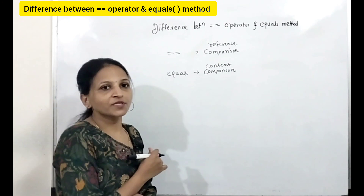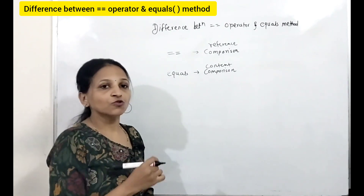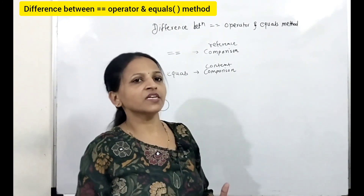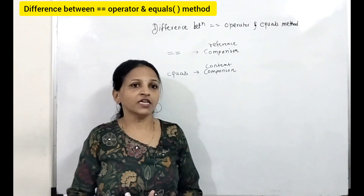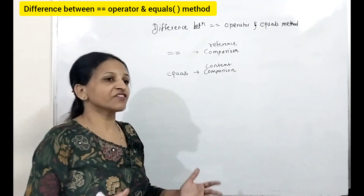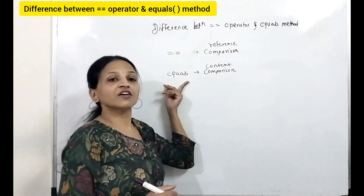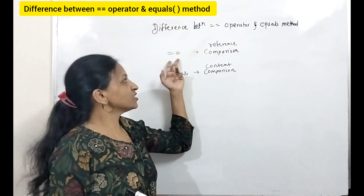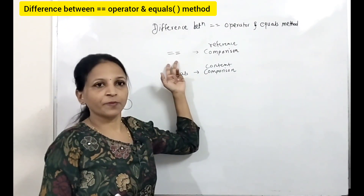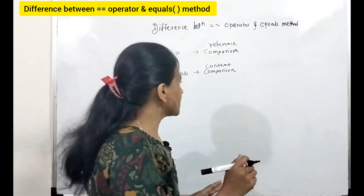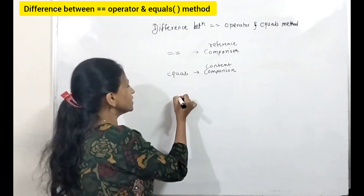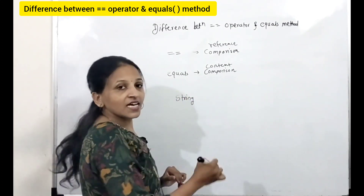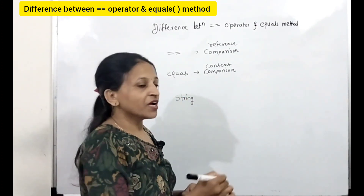Suppose two objects are there — whether those two objects are having the same contents or not, that we can check with the help of the equals method; we cannot use the equality operator for that. For example, suppose we take the String class, which is a built-in class in Java.